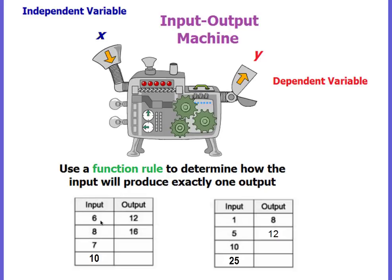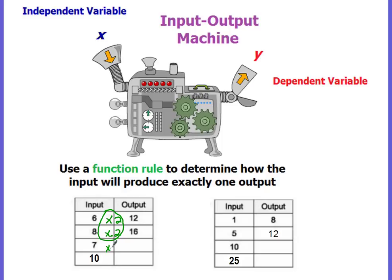Here are a couple of examples. The first one has an input of 6; the machine spits out a 12. We're increasing, so we're either adding or multiplying. Adding 6 works for 6, but 8 plus 6 is 14, not 16. So we're multiplying: 6 times 2 is 12, and 8 times 2 is 16. Our rule is multiplying by 2. So 7 times 2 is 14, and 10 times 2 is 20. You use the same rule for every input value.